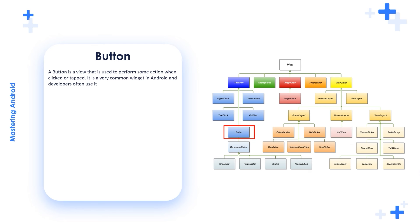The button inherits from the TextView, which in turn inherits from View. So the button inherits the attributes of the TextView — the ID, text, text color, size, and so on.